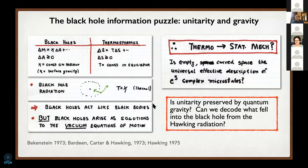There's a certain sense in which it's obvious that the physics has to be unitary. One argument is of course AdS/CFT correspondence—if quantum gravity is dual to a standard conformal field theory, there's no room in the standard conformal field theory for loss of information or lack of unitarity. So somehow it must be preserved.